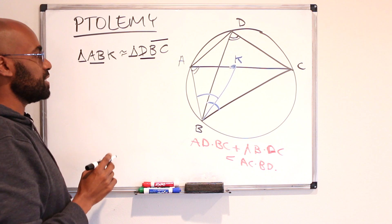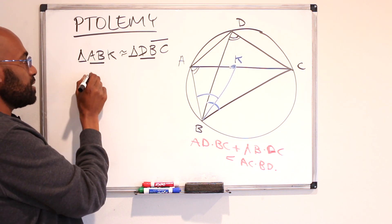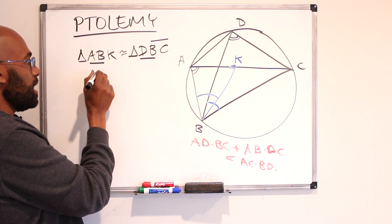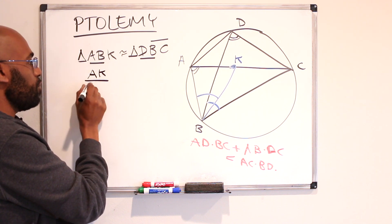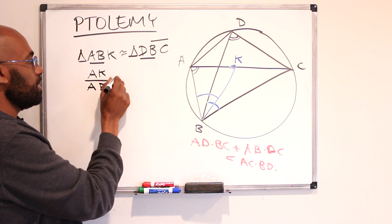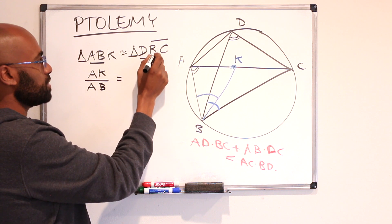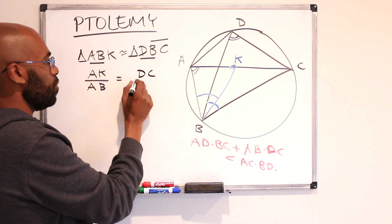So we might as well use these three and this will tell us by the similarity that AK over AB is the same as DC over DB.